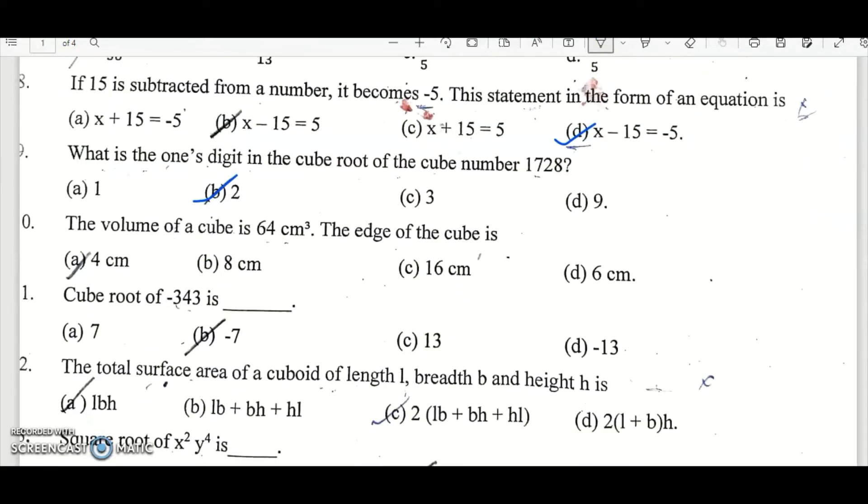The volume of a cube is 64 cubic centimeters. The edge of the cube is, so the volume of the cube is S cube equal to 64. So what would be this side equal to cube root of 64? That is 4 into 4 into 4 cube root. That is equal to 4. So the side of a cube would be 4 centimeters. Option A is the right answer.